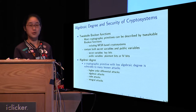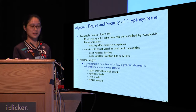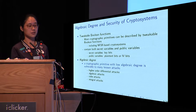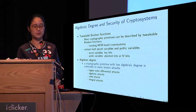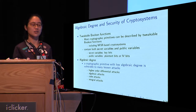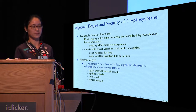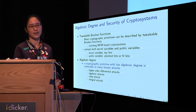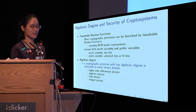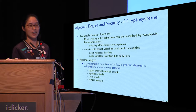Most cryptographic primitives, including NFSR-based cryptosystems, can be described by tweakable Boolean functions, which contain secret variables and public variables. The algebraic degree of these Boolean functions plays an important role in security. A cryptographic primitive with low algebraic degree is vulnerable to many known attacks, such as higher order differential attacks, algebraic attacks, cube attacks, and integral attacks.